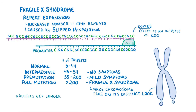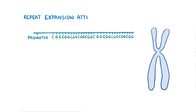Alleles can tend to get longer and longer as DNA polymerase becomes more and more unstable copying the longer stretches of repeats. So an intermediate expansion allele can become a pre-mutation allele, and a pre-mutation allele can expand to become a full Fragile X syndrome mutation. The repeat expansion attracts a DNA methylase enzyme to the site and causes the cytosines in the CGG repeats to become methylated.